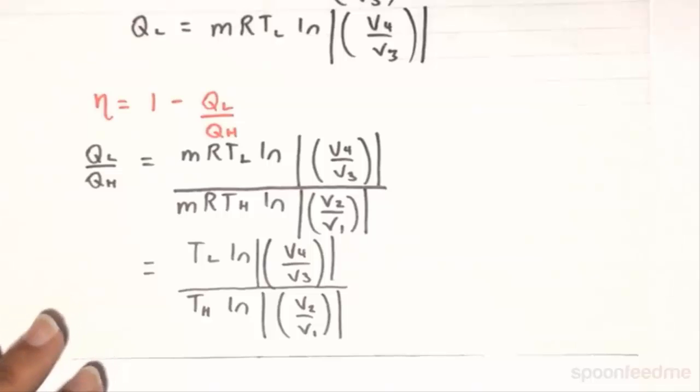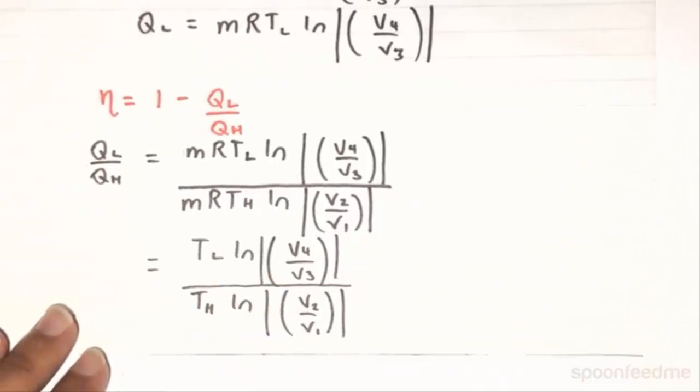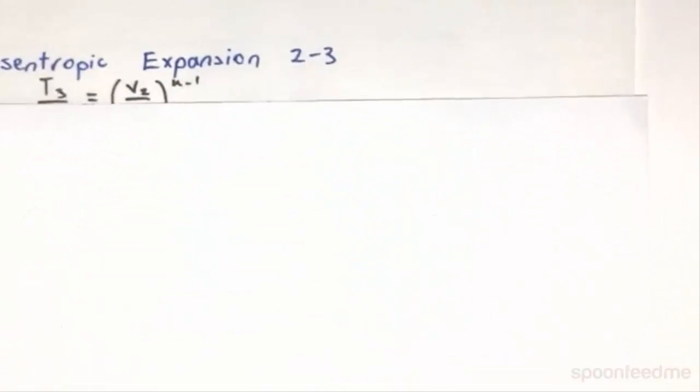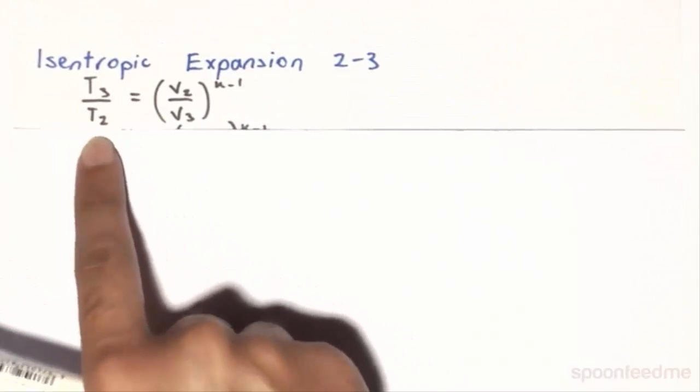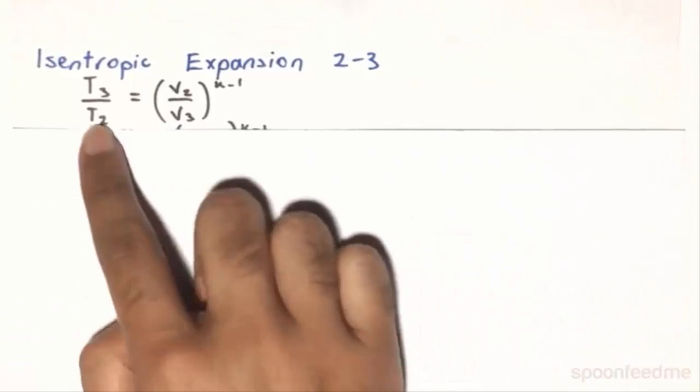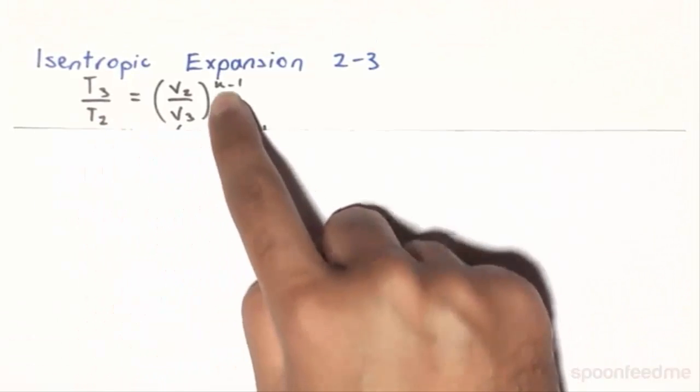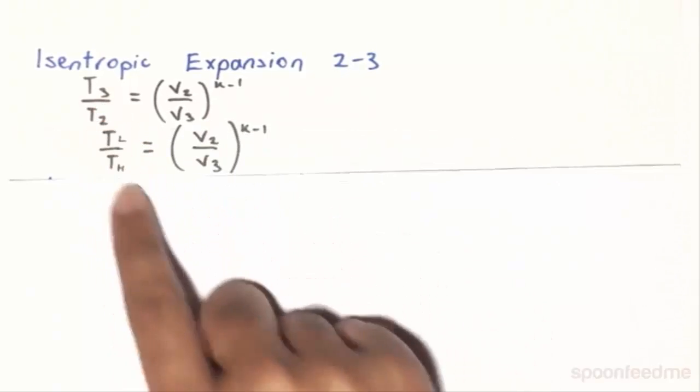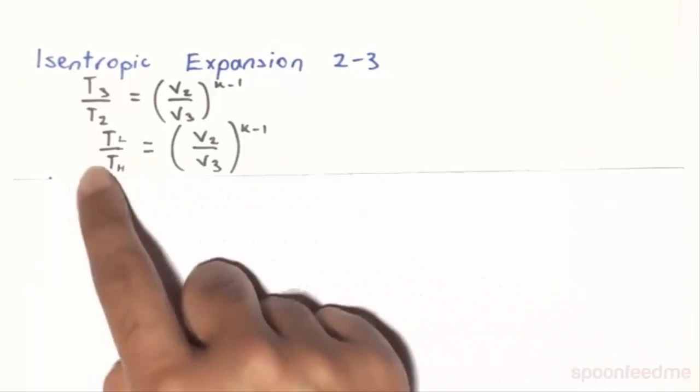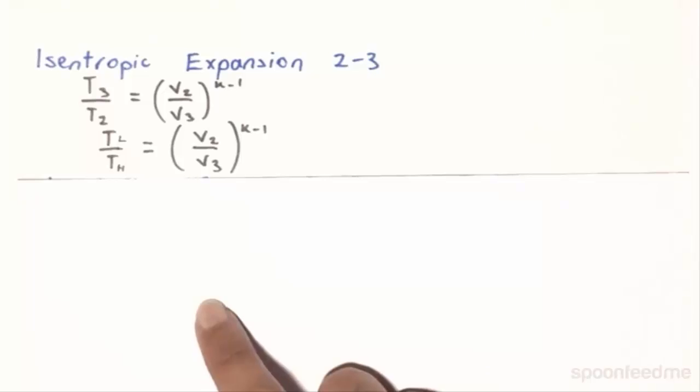So to further simplify this expression, we need to look at our isentropic processes. So now, if you look at the isentropic expansion 2-3, we know from the isentropic cases for ideal gases that this ratio holds true. That is, that T3 on T2 is going to equal to V2 on V3 to the power of K minus 1. Now, T3 is already equal to TL, and T2 is equal to TH, so therefore we can find TL on TH is equal to V2 on V3 to the power of K minus 1.